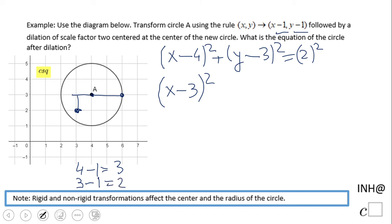The radius of two is doubled because of the scale factor of two, giving us four squared. So we get the equation (x - 3)² plus (y - 2)² equals 16.